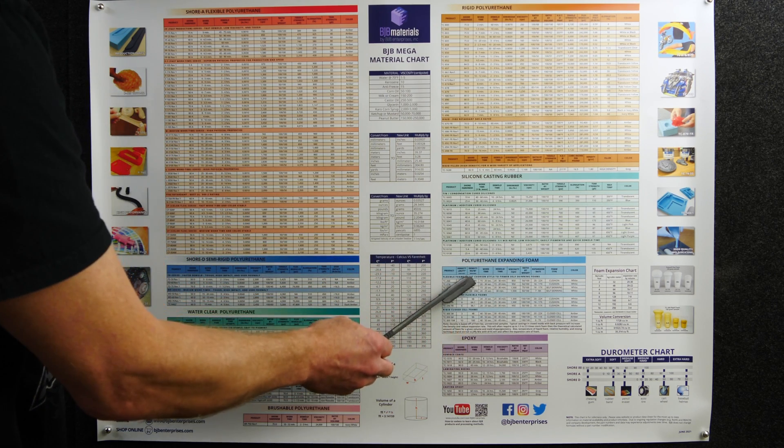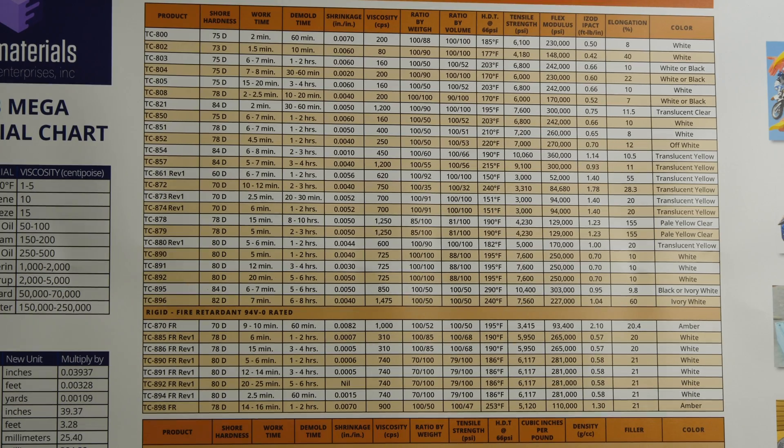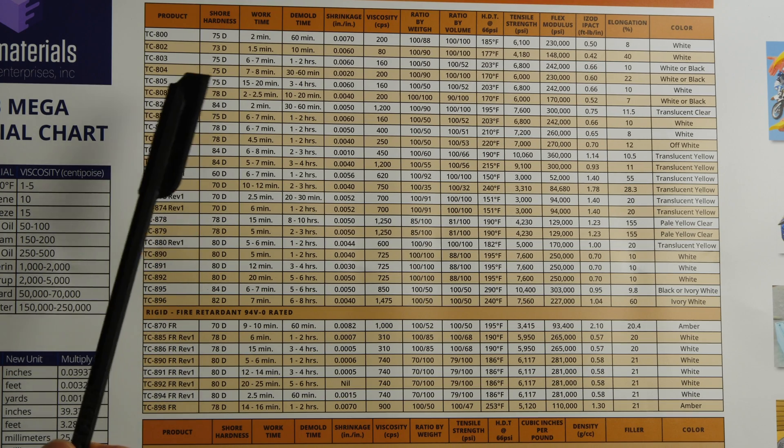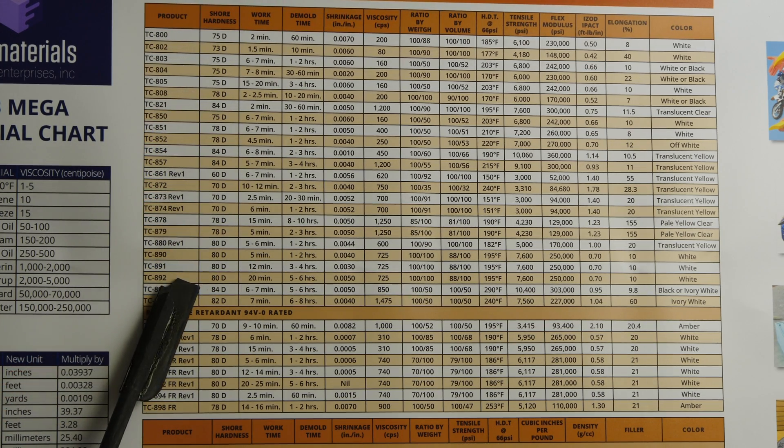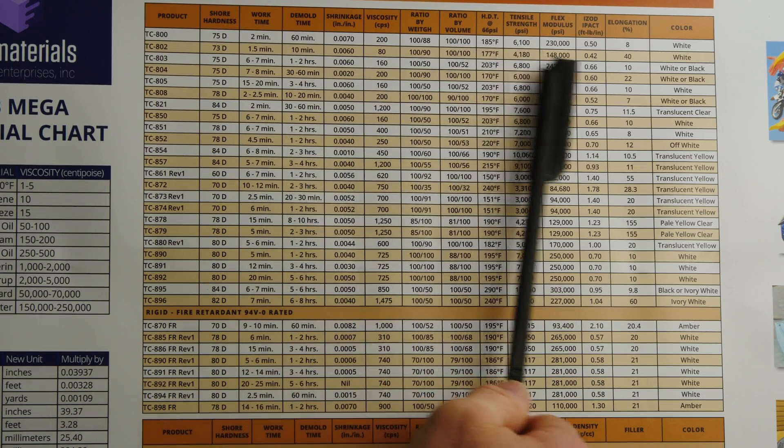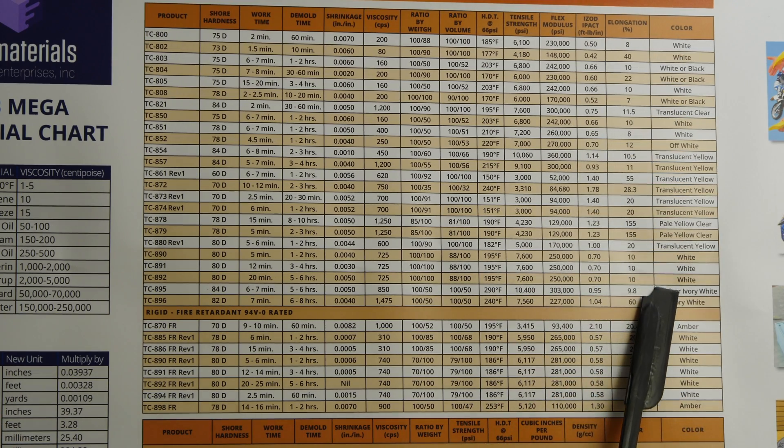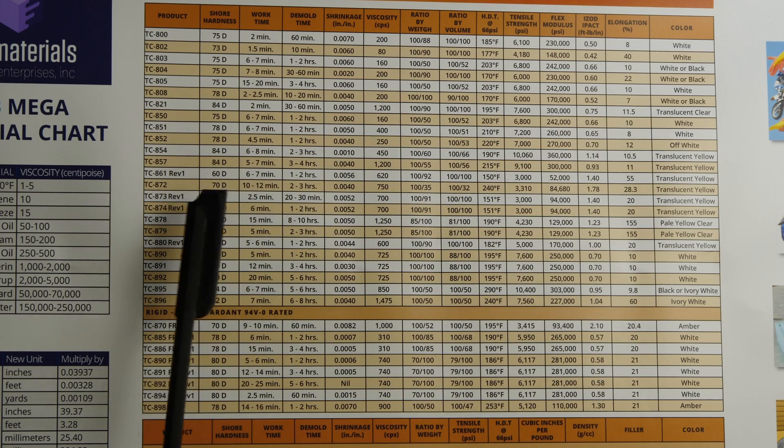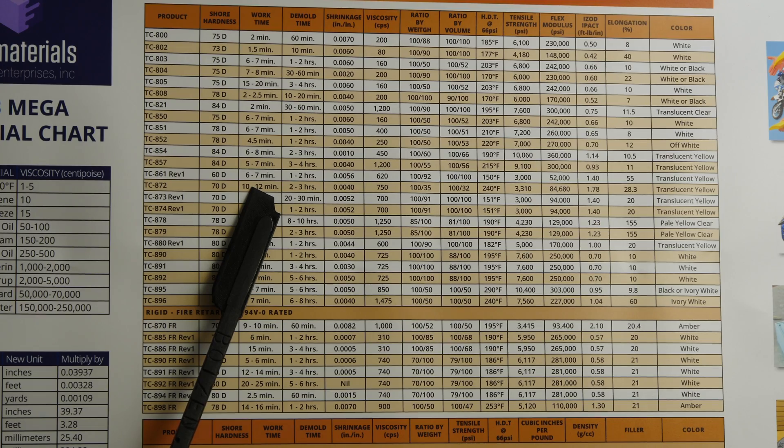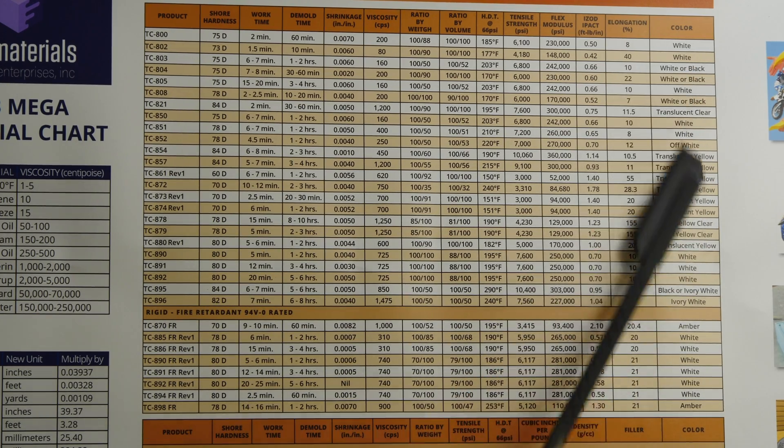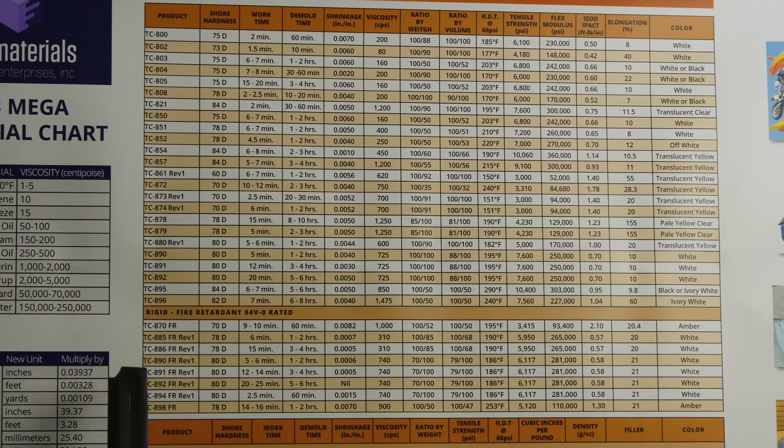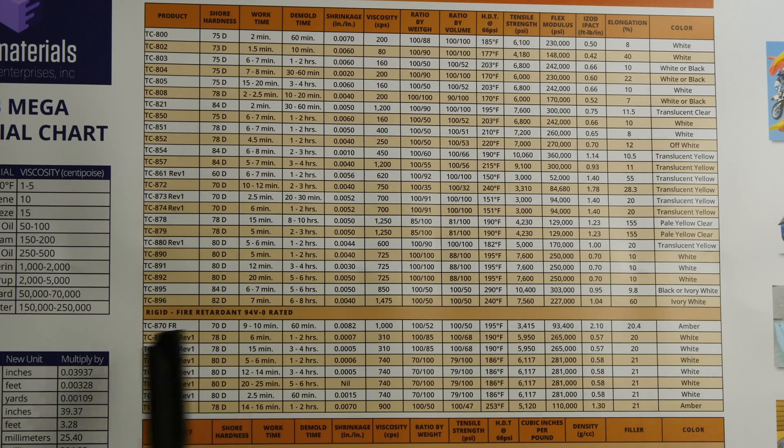Rigid polyurethanes are over here, silicone casting rubber for making molds, expandable polyurethane foams, and then epoxies. Let's see how these charts work. This shows you basically the shore hardness of the materials, the working time, the demold time, shrinkage, and a bunch of other things. Most importantly, the color potentially, so you can choose a material based on the hardness that you need, the work time that you need for your project, and whatever color you need.